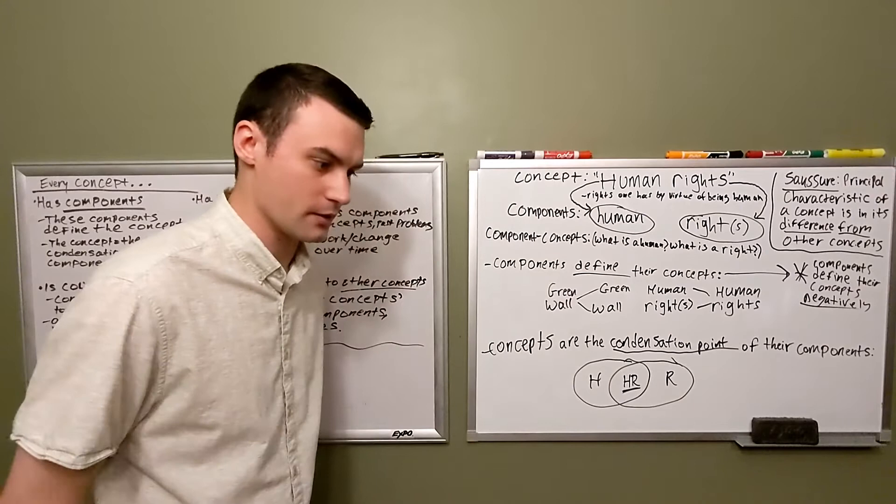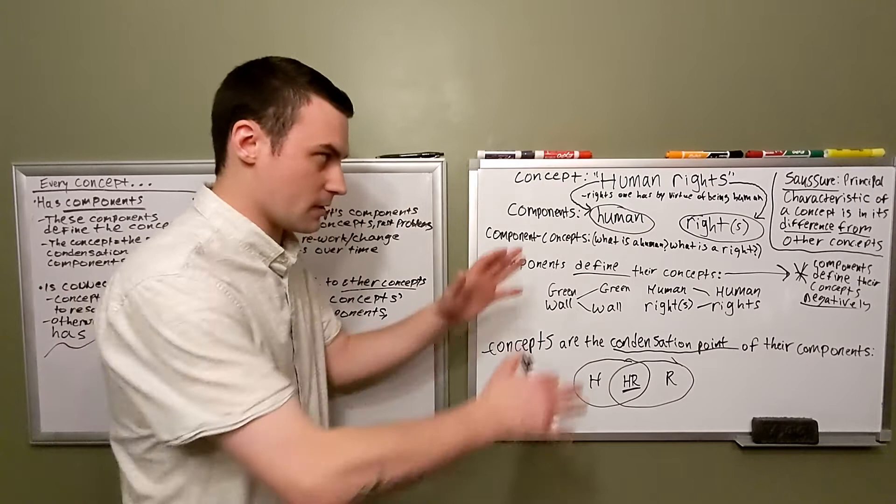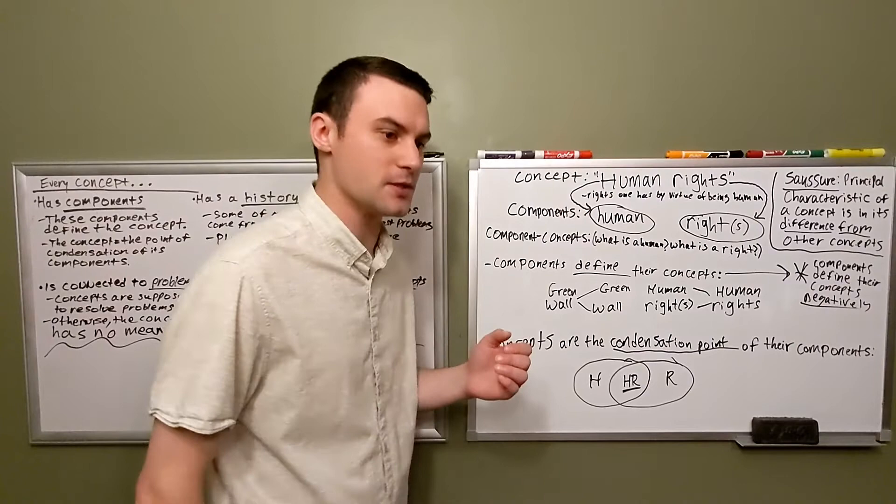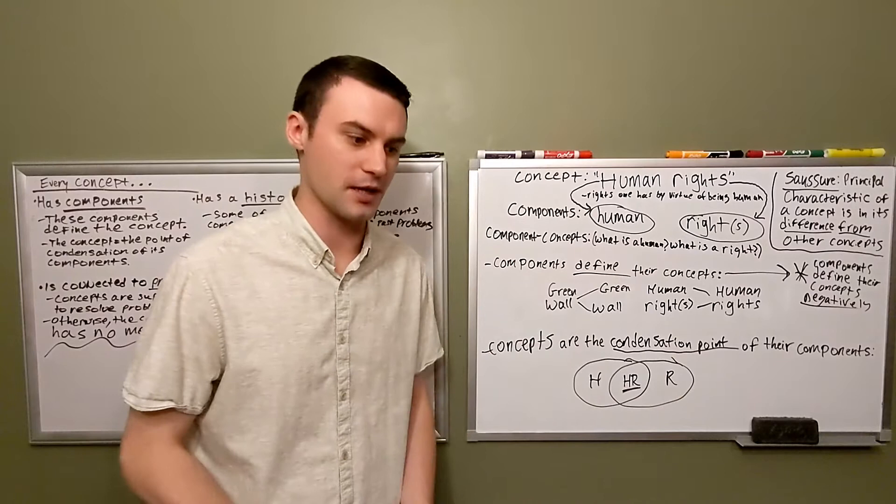I've included a quote from Ferdinand de Saussure, the Swiss linguist who had a great deal of influence on continental thought in the 20th century. And this is just a paraphrase from a quote from his course on general linguistics, where he says that the principal characteristic of a concept is in being what other concepts are not, is in its difference from other concepts.